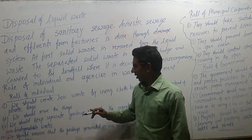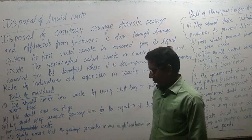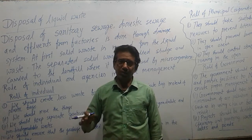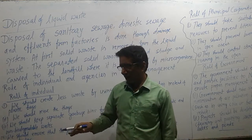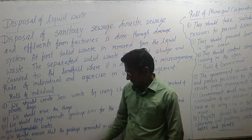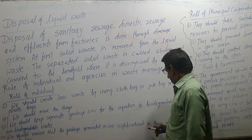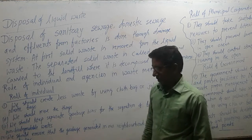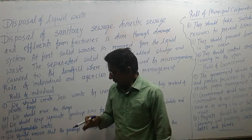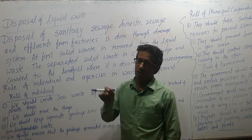We should keep separate garbage bins for the segregation of biodegradable and non-biodegradable waste. There are two types of waste: biodegradable waste and non-biodegradable waste, so we should keep garbage in separate bins. We should also ensure that garbage generated in our neighborhood is thrown in the community bins, as it is the duty of people to dispose of garbage properly.